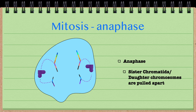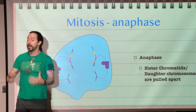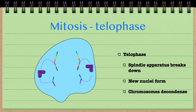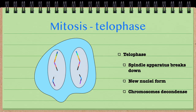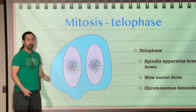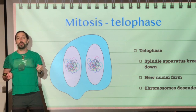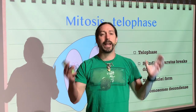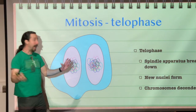Now that we have pulled apart each of our sister chromatids, we enter telophase. Telophase is very much like prophase but in reverse: our spindle apparatus is going to break down, our two new nuclei are going to form, and lastly our chromosomes, once placed in their new nuclei, are going to decondense. So we have new nuclei formed around our single copies of chromosomes, and they decondense back into chromatin. Now we have a cell with two nuclei — each an exact copy of the other, their DNA completely identical. That is the end of mitosis.